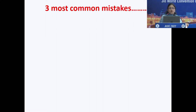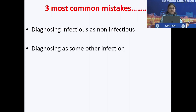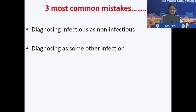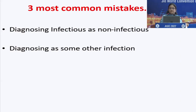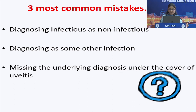What are the three common mistakes? The first: we diagnose an infectious etiology as non-infectious. The second: we diagnose it as one infection and it turns out to be another one. And the third: where you have uveitis which is actually masking an underlying etiology. These are the three common mistakes we are bound to make in our practice.